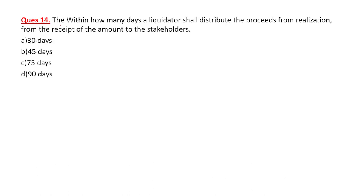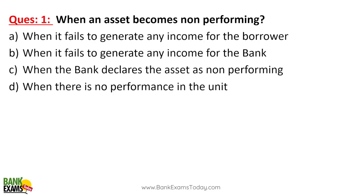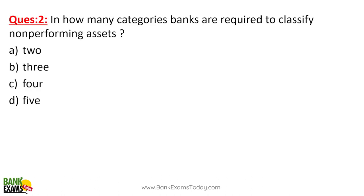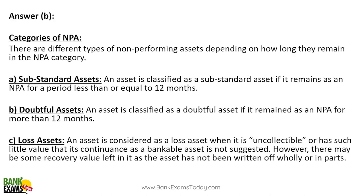Within how many days must a liquidator distribute proceeds from realization to stakeholders? Within 90 days. When does an asset become non-performing? When it fails to generate any income for the bank — that is a non-performing asset (NPA). Banks are required to classify their NPAs into three categories: substandard assets, doubtful assets, and loss assets.